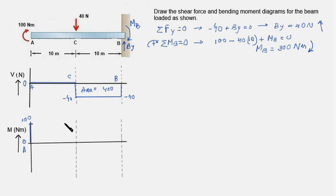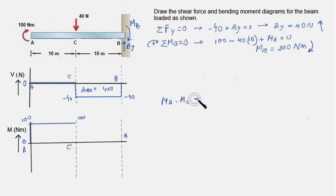Between A and C, the shear force curve is 0, so we draw a horizontal line in the bending moment diagram. Now we work out MB. MB minus MC equals the area under the shear curve, which is 400. Since the area is on the negative side, that is minus 400, MB equals MC minus 400, that is 100 minus 400, giving minus 300 Nm.